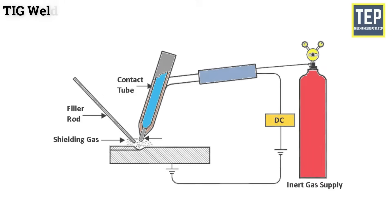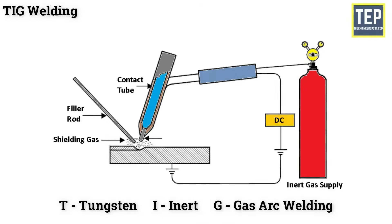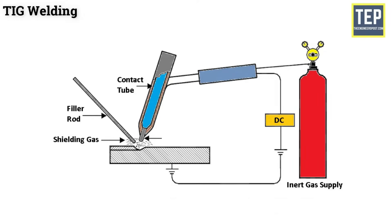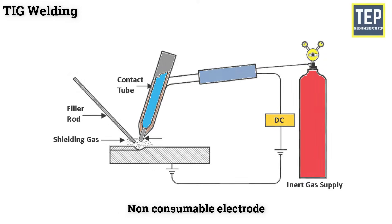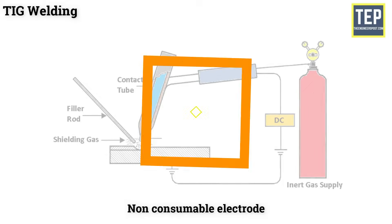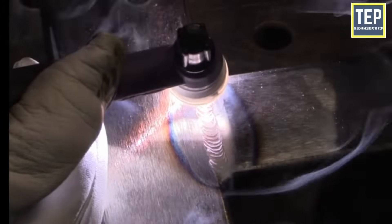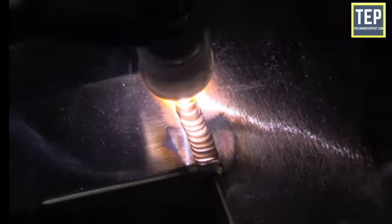TIG stands for Tungsten Inert Gas Arc Welding. This welding employs a tungsten electrode because tungsten has a high melting point. When we take the TIG weld, the electrode gets hot but it doesn't melt — we say that it is a non-consumable electrode. Non-consumable electrodes do not mean that they last forever; it means that they do not melt.